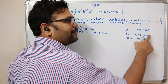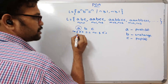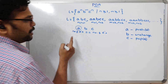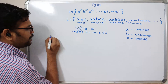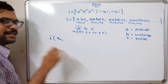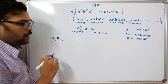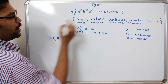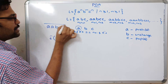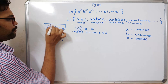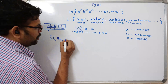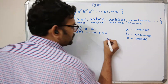Now we will start writing the transition functions. Let us take the example input 'aabcc'. The initial state is q0. Let this be the input tape.